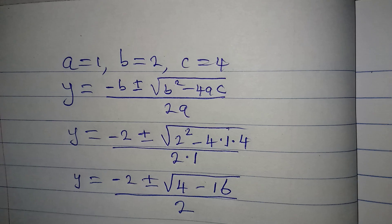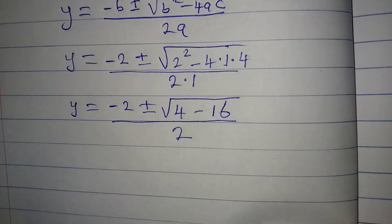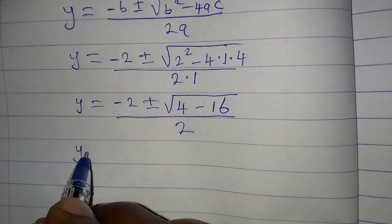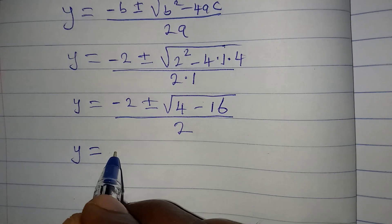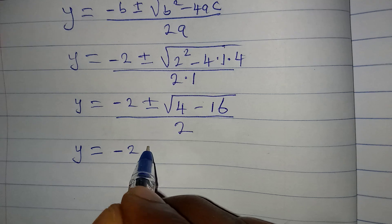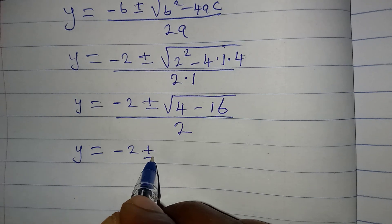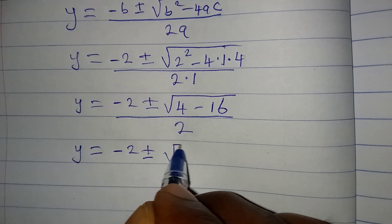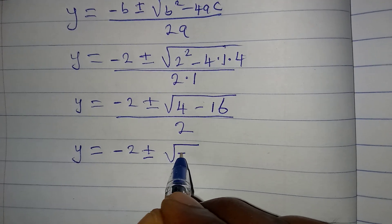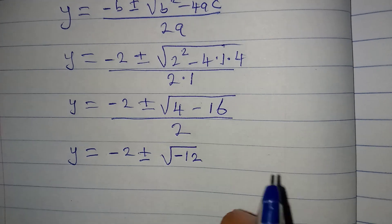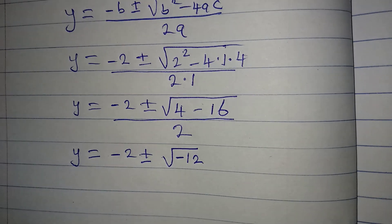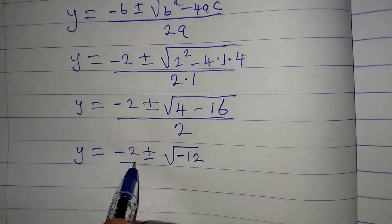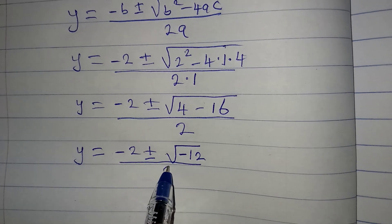This simplifies to y equals minus 2 plus or minus the square root of negative 12, over 2. That is 4 minus 16 equals negative 12, all over 2.